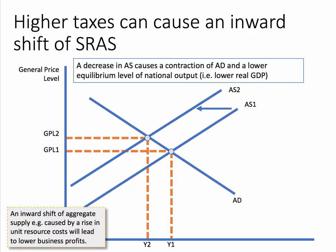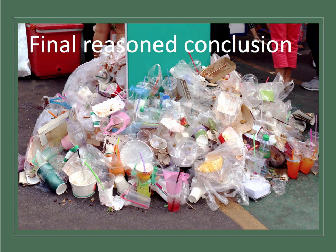I can add in a macro diagram here — I wanted to put in a macro point that there's a risk of cost-push inflation caused by the inward shift of aggregate supply. So I've made three points, analyzing and evaluating each one. It's quite important, if you have time, to come to a reasoned, balanced conclusion.